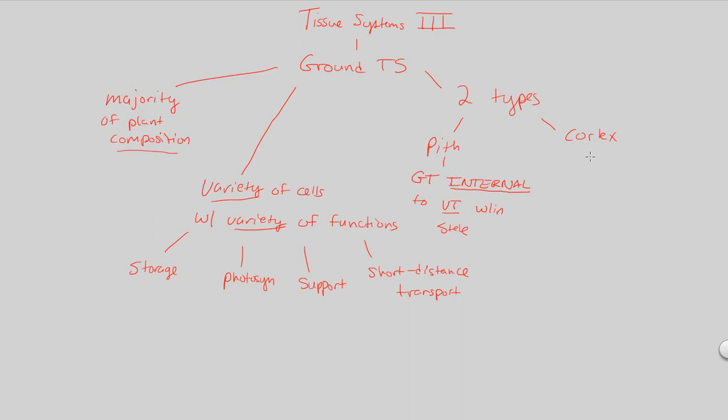Whereas the cortex is the exact opposite. This is going to be ground tissue that is external, that is covering the outside. It's external to the overall vascular system. So it is around the xylem, phloem, stele structure, not within it. So that covers our ground tissue.